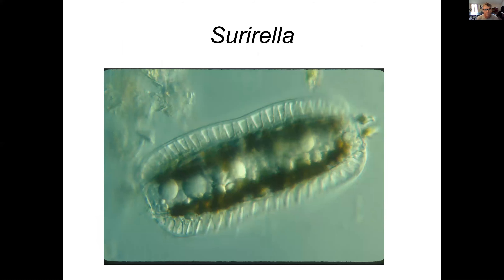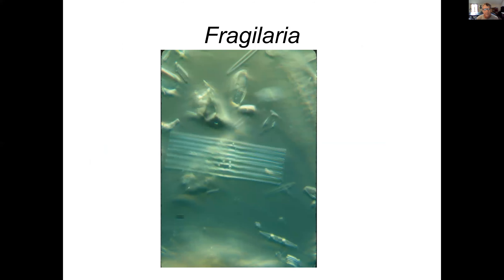To illustrate the tremendous variability, Surirella is here. Fragilaria is one that's long and thin — the two long thin pieces come together and each of the cells stay stuck together, making the ribbon shape seen in the middle.